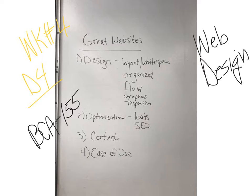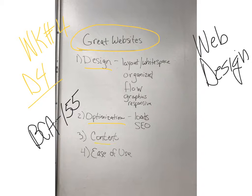I was not here, but Kelly Miller went over great websites and split it up into design, optimization, content, and ease of use — it's a good list. Layout, white space — white space is important — organize, flow, graphics, responsive.